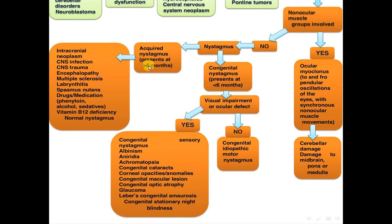For nystagmus acquired after the age of six months or congenital before six months, assess for visual impairment or ocular defect. If not present, this is congenital idiopathic motor nystagmus. If visual impairment or ocular defect is present, this is congenital sensory nystagmus — associated with albinism, aniridia, achromatopsia, congenital cataract, corneal opacity, congenital macular lesion, congenital optic atrophy, glaucoma, or congenital stationary night blindness.